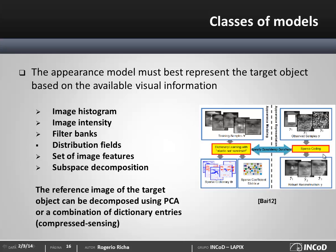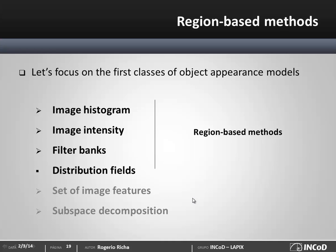These subspace models are also useful in cases where the target object is partially occluded. Principal component analysis and dictionary-based approaches are often employed in this context. In this first part of the tutorial, I'll focus on the simpler appearance models often used in region-based tracking, and I'll leave feature-based tracking and subspace methods for another video.